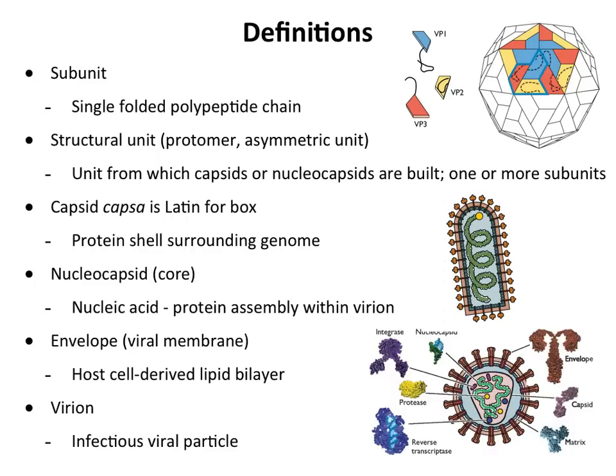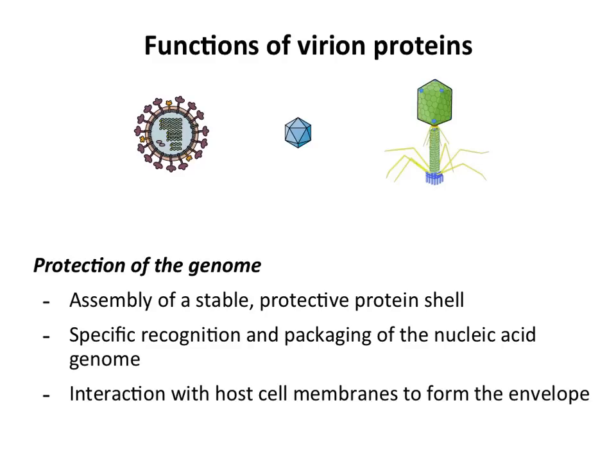In rabies virus, this curly green molecule is a nucleocapsid — RNA bound to protein. In a retrovirus, the same thing: the green molecule is the nucleocapsid. Poliovirus just has naked RNA inside; that RNA is not a nucleocapsid because it doesn't have any protein associated with it. The envelope is the membrane around the particle. The virion is the infectious virus particle — whenever I say virion, I mean the infectious particle.